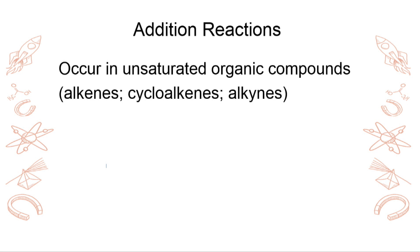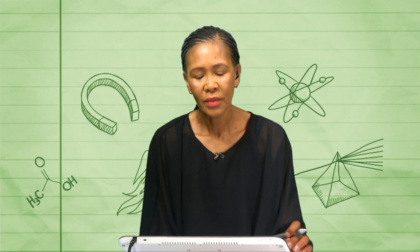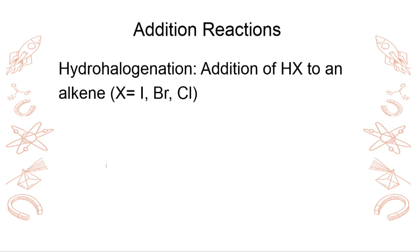The first one is about addition reactions, and when will we get that? They occur in unsaturated organic compounds like alkenes, cycloalkenes, alkynes, and cycloalkynes if they are there. Another type, which is still a type of addition reaction, is called hydrohalogenation — 'hydro' because there is hydrogen there, and 'X' represents a halogen. That's why this is called hydrohalogenation: you are adding that hydrohalogen.